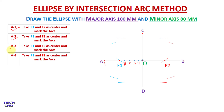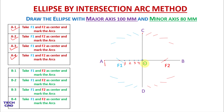Take distance A to 3, put the compass at F1 and mark an arc, and also downside. Then come to F2 and mark an arc, also downside. In the same way, take A to 4, put the compass on F1 and mark an arc, and downside as well. Then put the compass at F2 and mark an arc upside and downside as well.